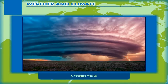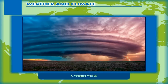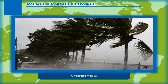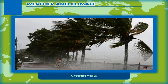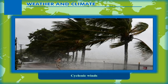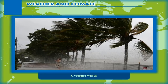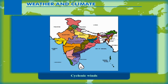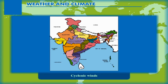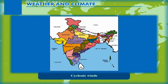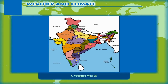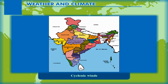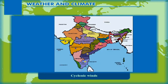In a cyclone, the wind blows at a speed of 150 to 250 km per hour. The Indian subcontinent is often hit by cyclones. The cyclones hit the Arabian Sea coast as well as the Bay of Bengal. The states of West Bengal, Odisha, Andhra Pradesh and Tamil Nadu along the Bay of Bengal, and Gujarat and Maharashtra on the Arabian Sea coast, are most vulnerable to cyclones.